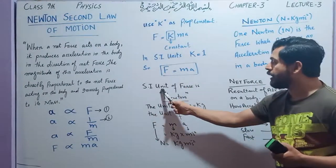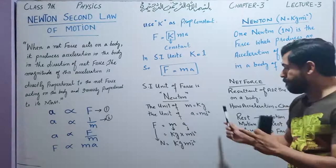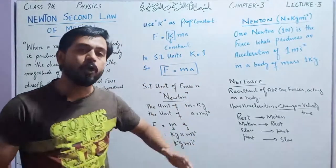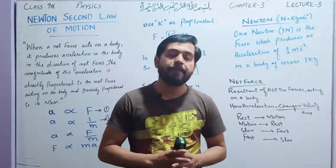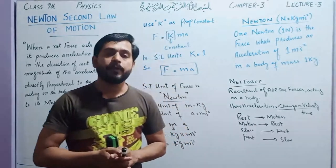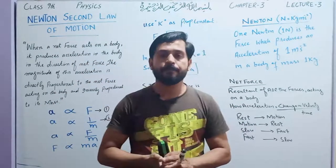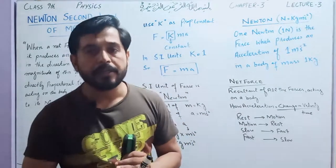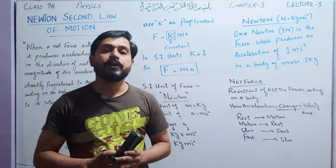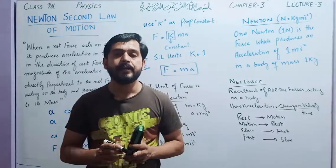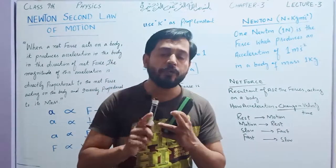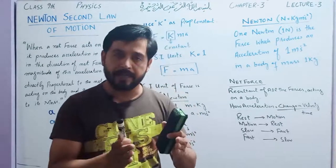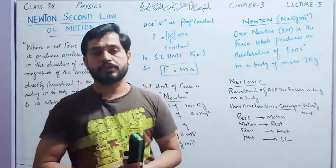The unit of force is Newton. Let us understand what Newton's second law means physically. If we have a body of 1 kg mass and we provide a force upon it, using the unit of force: when we apply a force to a 1 kg body and it produces an acceleration of 1 m/s², that force is called 1 Newton. So 1 Newton is that force which produces an acceleration of 1 m/s² in a body of mass 1 kg.